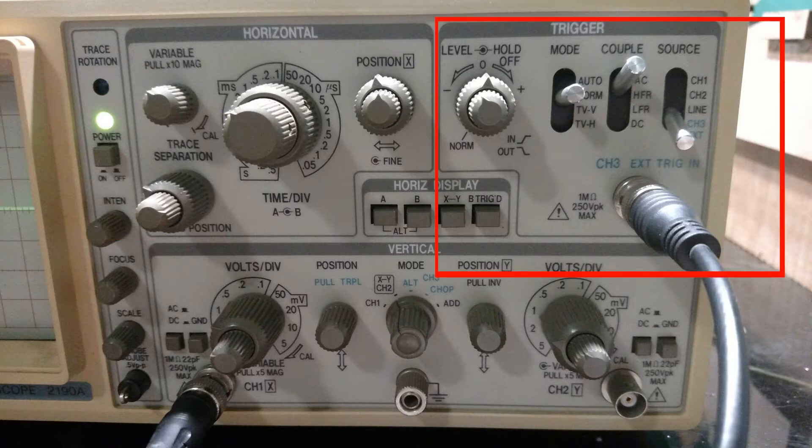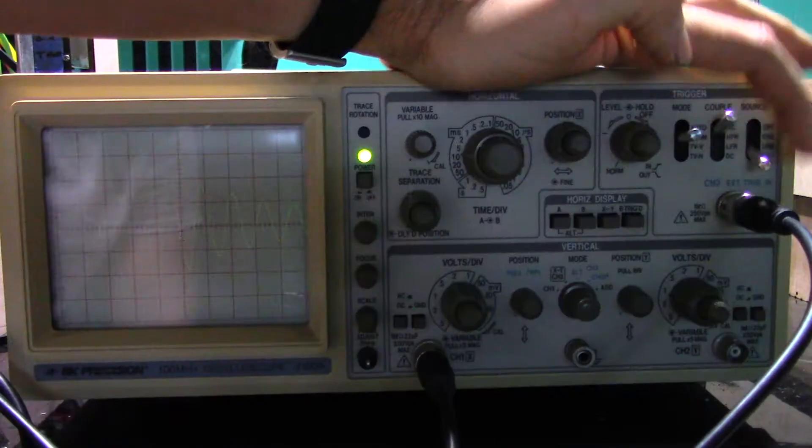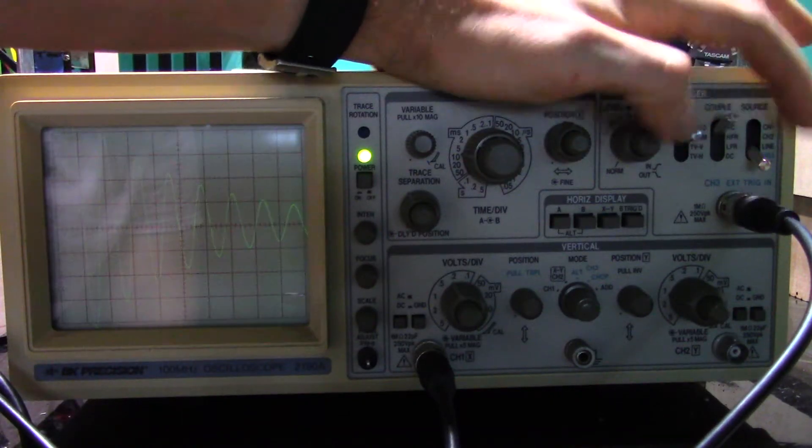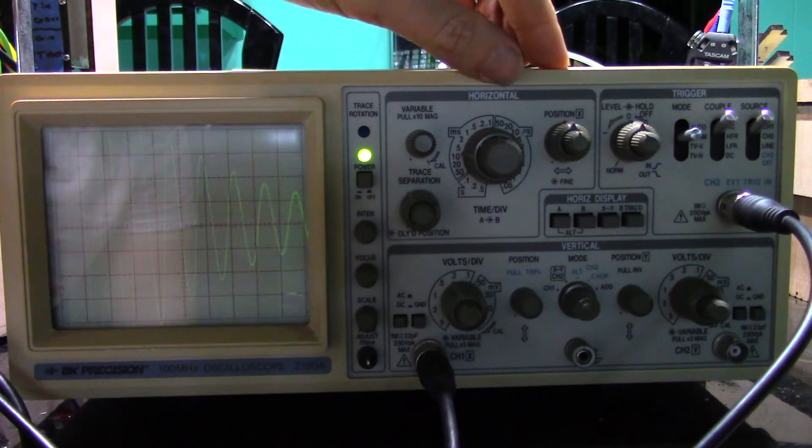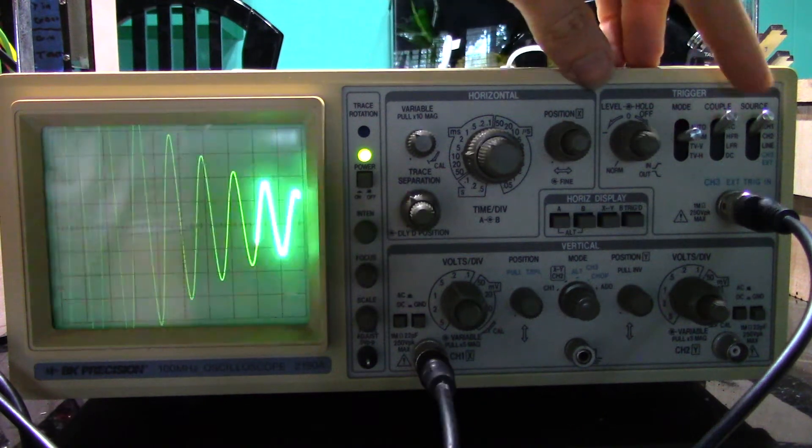Now everyone has noticed by now this second cable connected to the scope that I haven't talked about yet. I'm using this input to trigger the trace across the screen. Oscilloscopes will have a number of different triggering options that initiate the trace being drawn on the screen. Some of these will be more appropriate than others for looking at synth waveforms.